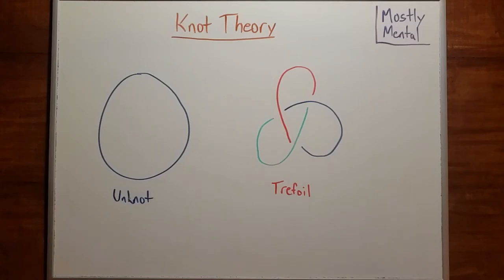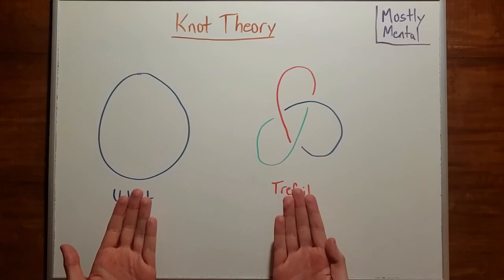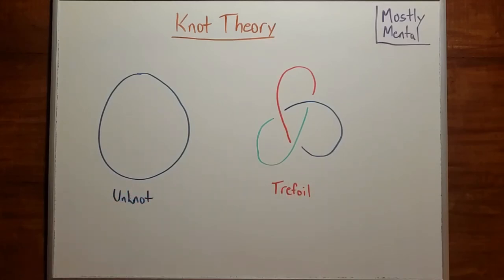That is, we didn't prove that an unknotted loop is different from the trefoil. In fact, we haven't even shown that there are knots that can't be undone. To do that, we're going to need to dive deeper into knot theory.